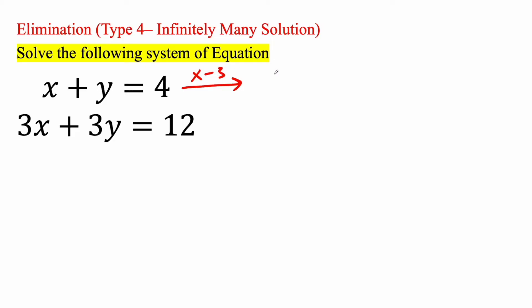So x times negative 3 will give us negative 3x. Negative 3 times y will give us negative 3y is equal to 4 times negative 3 is negative 12. Now this piece will keep it the same, so times 1. And we're going to get 3x plus 3y is equal to 12.